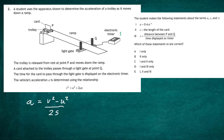The student makes three statements about the terms u, s, and v. First, the student states u = 0 m/s — this is correct, because the trolley starts from rest, so the initial velocity is zero. Second, the student states that s is the length of the card — this is wrong. In fact, s is the distance the trolley travels from point P to point Q: that is the displacement over which the change in velocity occurs.